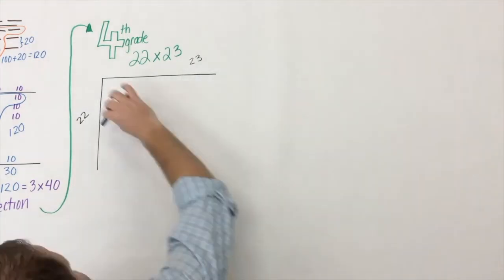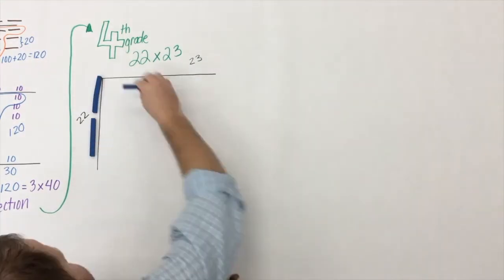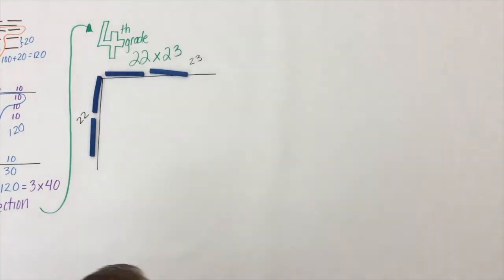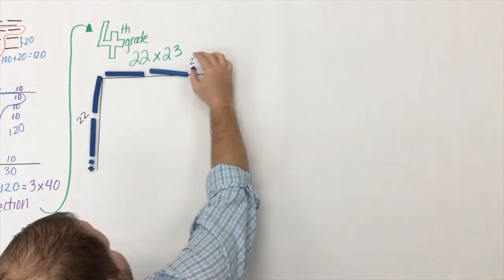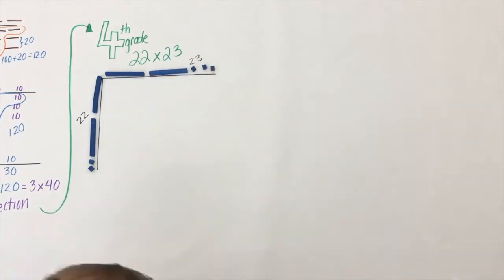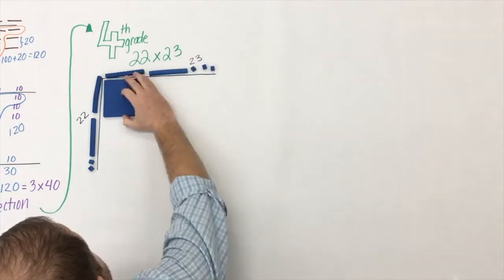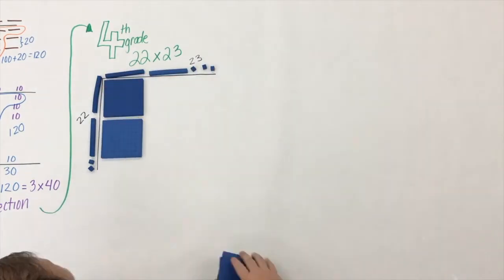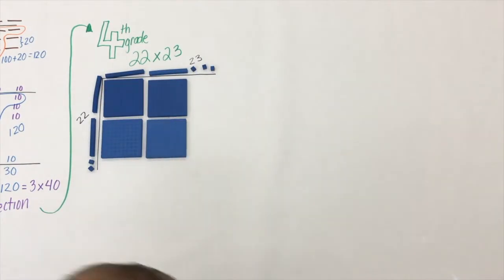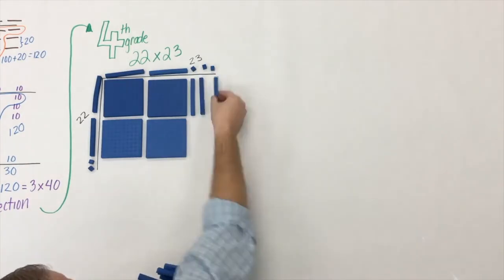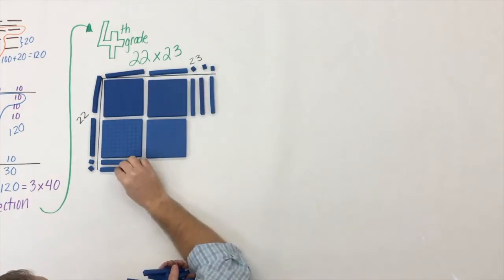In fourth grade, students are expected to multiply two-digit by two-digit numbers. With a concrete model it looks much the same — we have 23 across the top and 22 down the side. Ten times ten is 100, and that's where those hundred plates come into play.